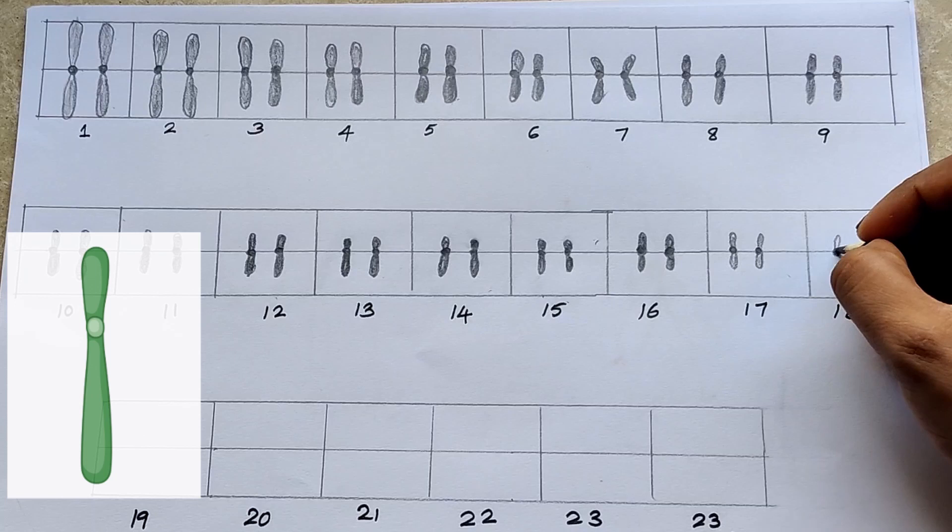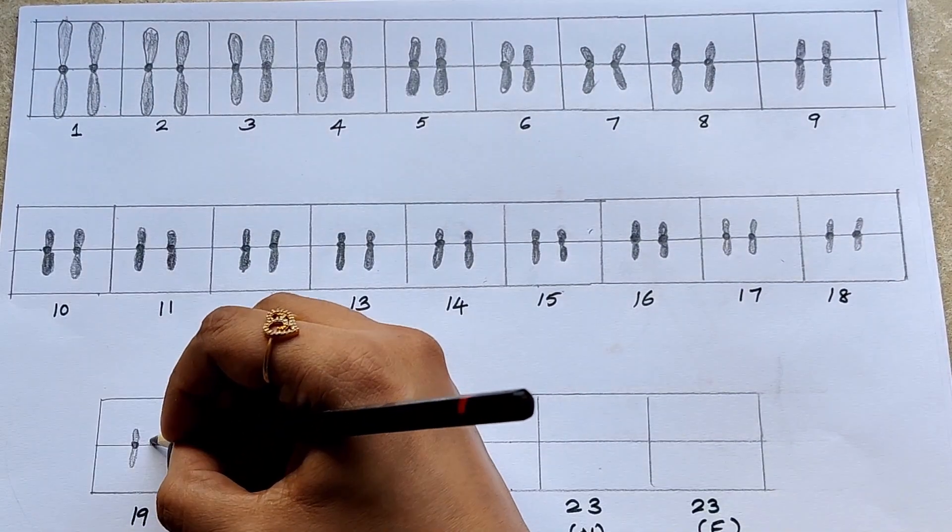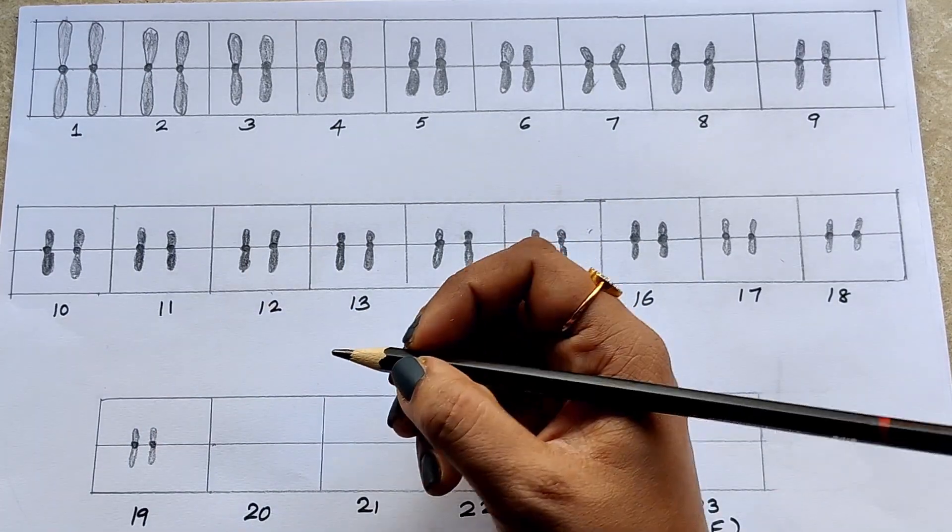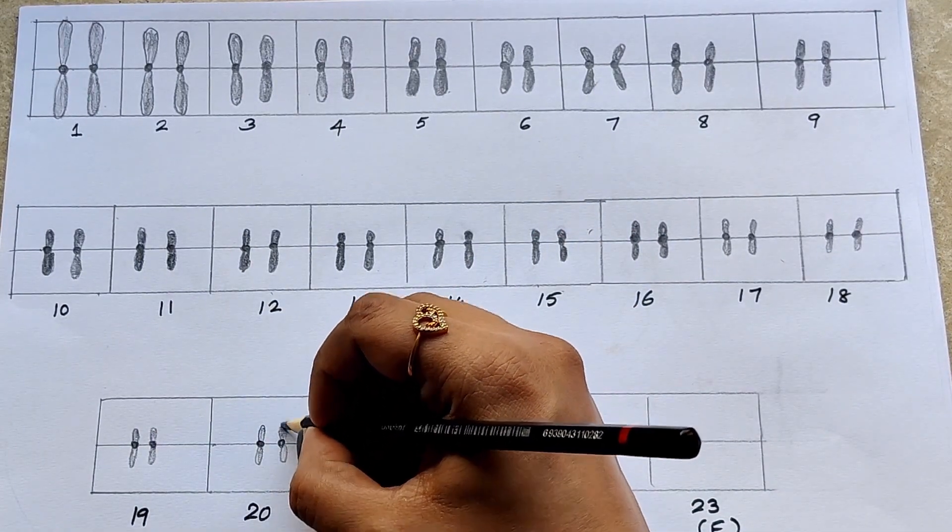16th to 18th are submetacentric but are smaller in size. 19th and 20th are metacentric again.